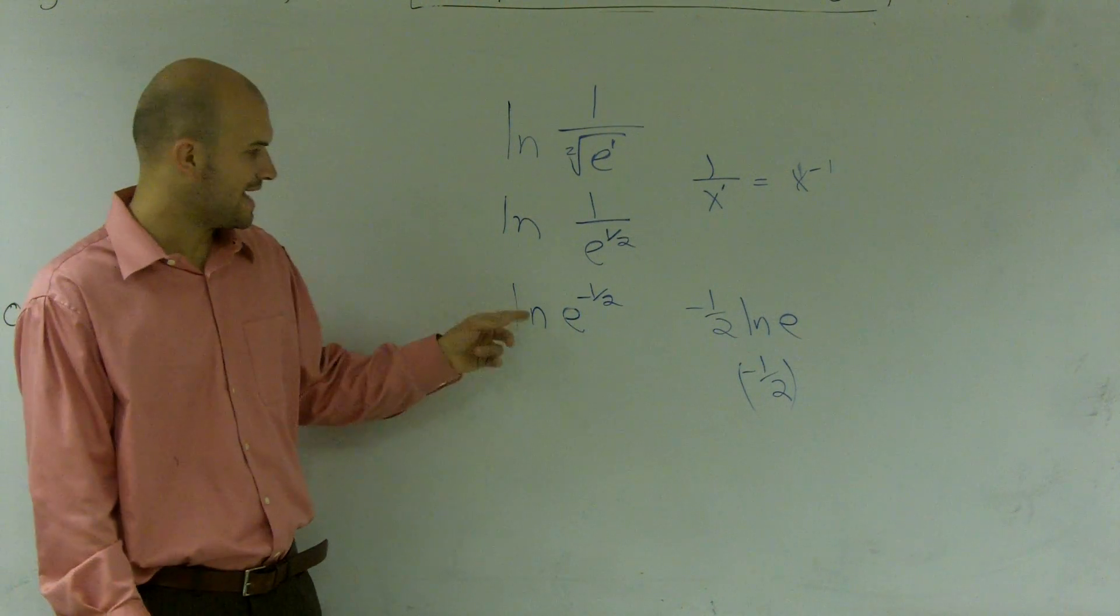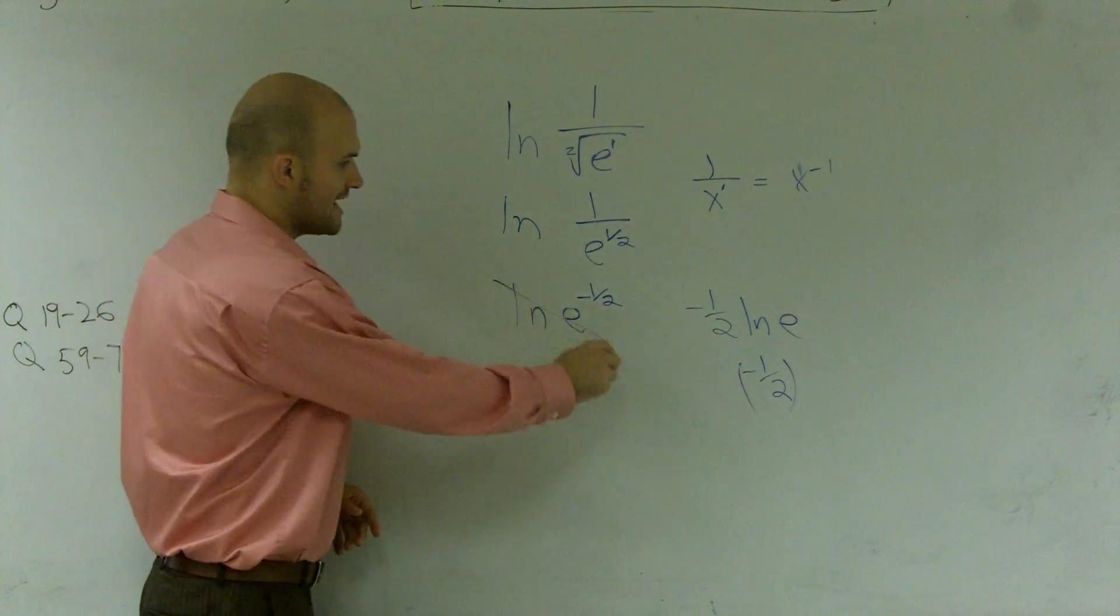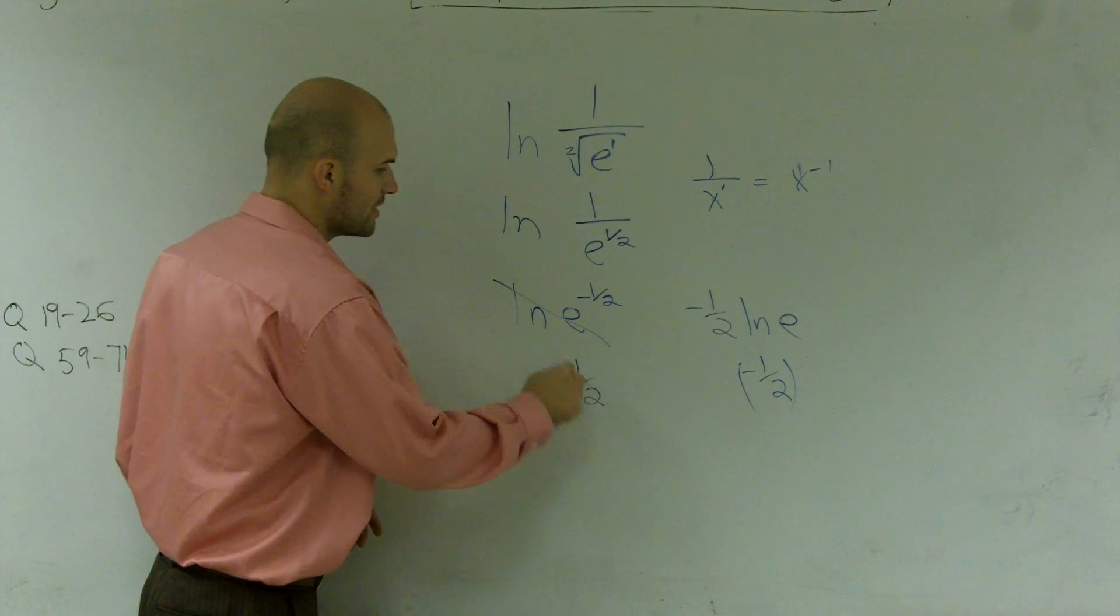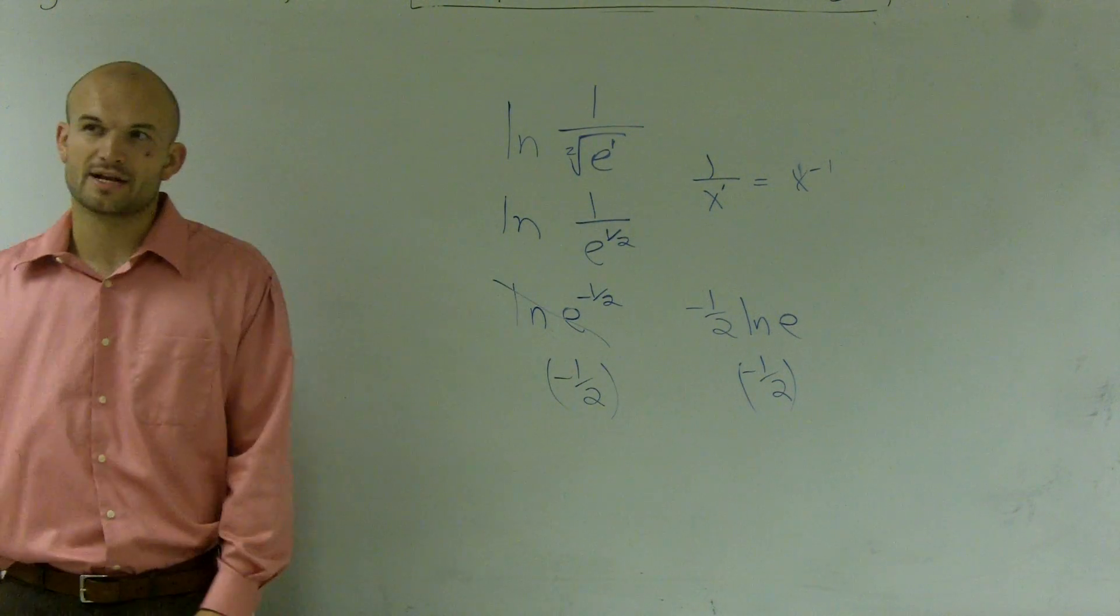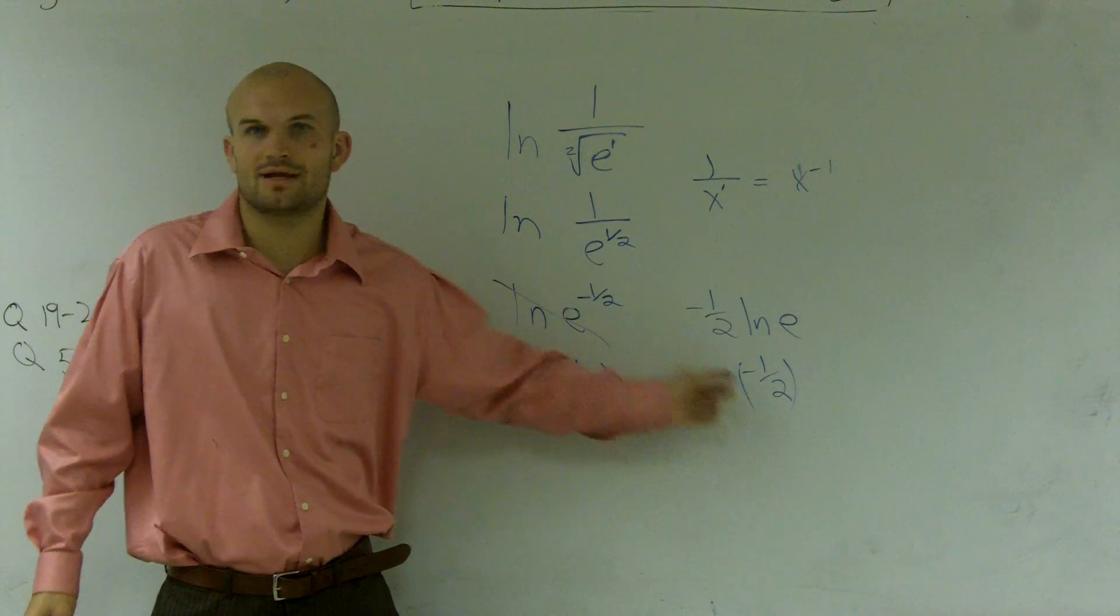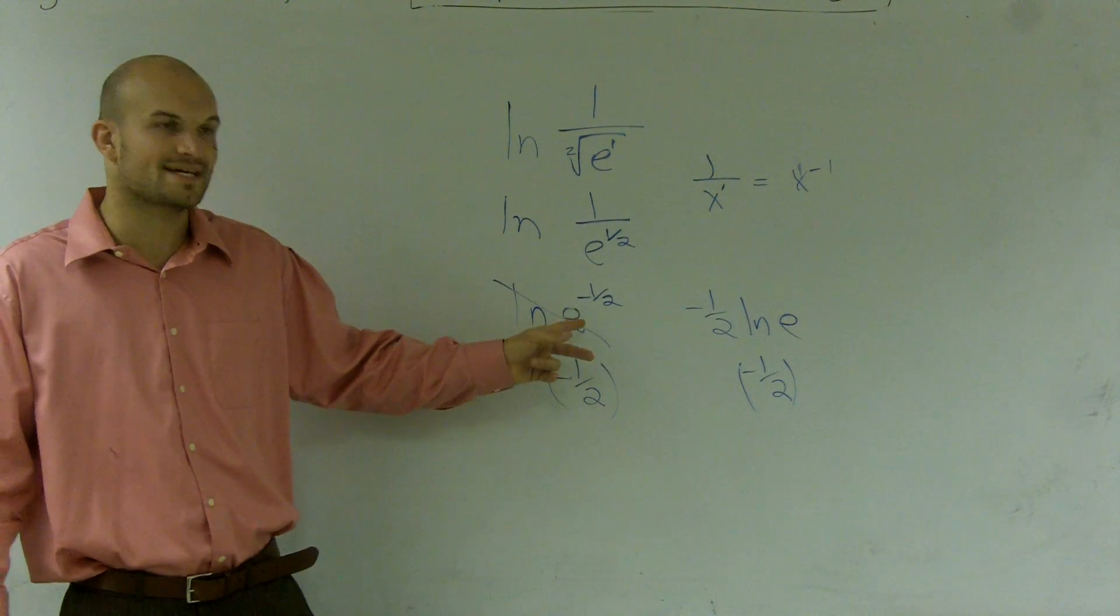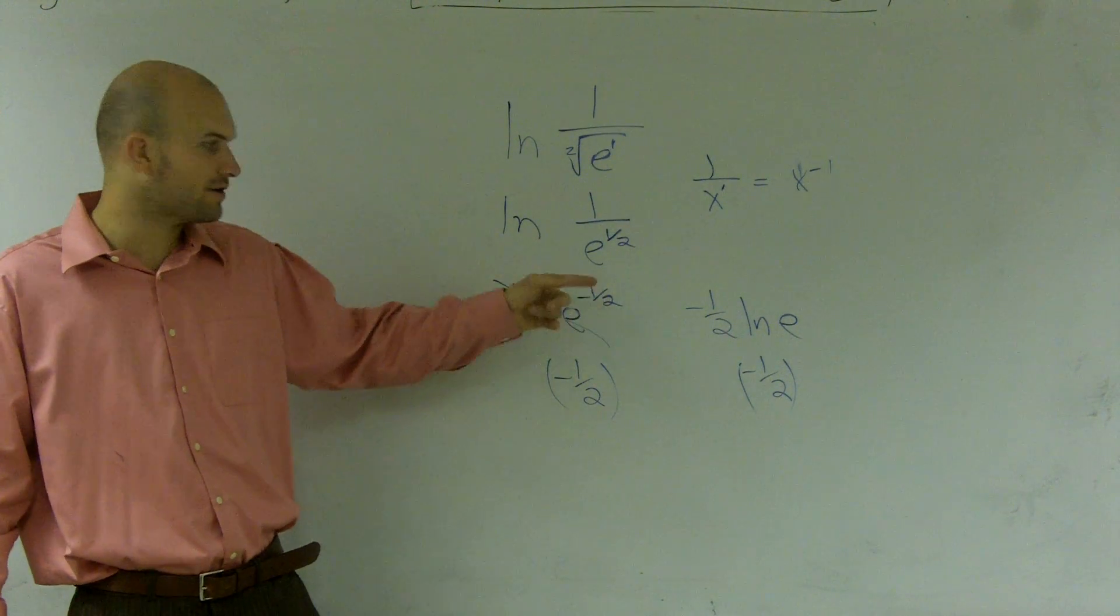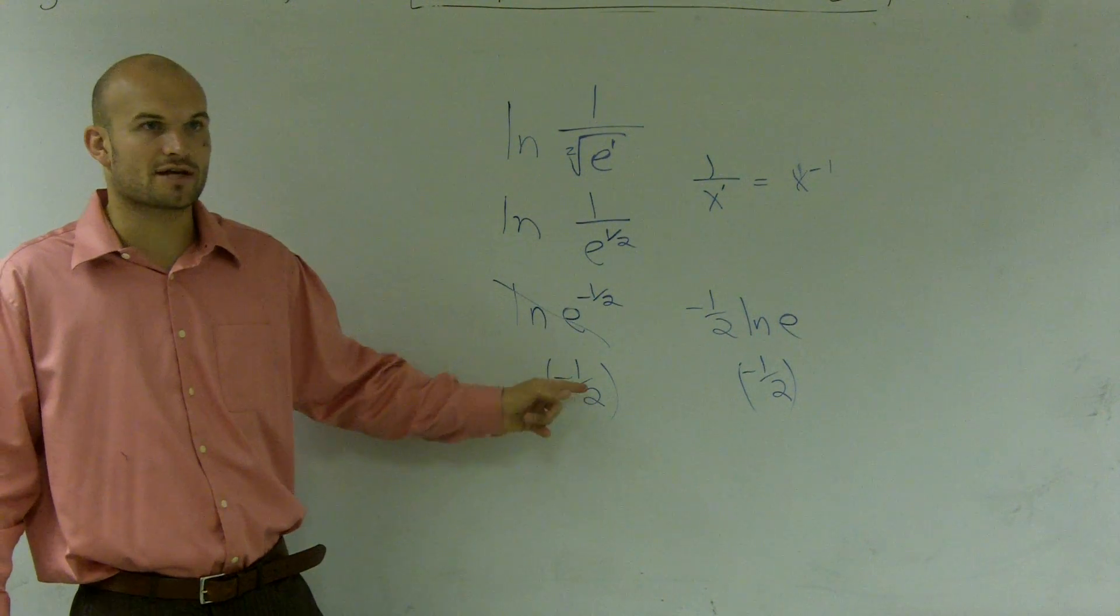You could also just use the rule that whenever you have ln of e, that cancels out and you're just left with whatever the exponent is, which is negative one-half. So it doesn't matter. You can use this rule and evaluate, or you can just use the rule that's in the book that just tells you ln of e raised to that power is just going to be your exponent.